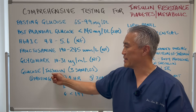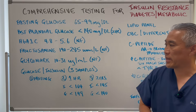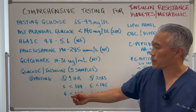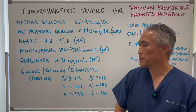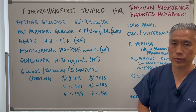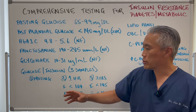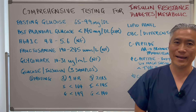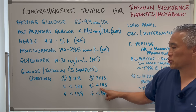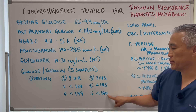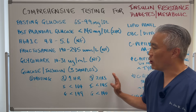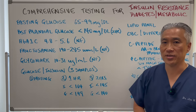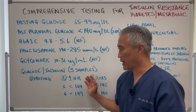You can also do a combined glucose and insulin test with three samples at the lab. They give you a glucose solution, then measure glucose and insulin in the fasted state, and again at one hour and two hours. At one hour after the glucose load, insulin should be less than 164 and glucose below 199. At the two-hour mark, insulin should be below 145 and glucose below 140. This test is often used for gestational diabetes but is also good for detecting insulin resistance.